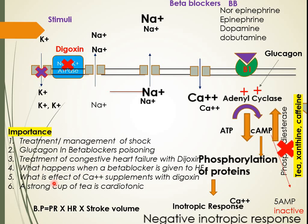Calcium supplements given in combination with digoxin — which already increases cytosolic calcium — may cause drug-drug interactions, so you should be vigilant about that. Also, a strong cup of tea in a hypertensive patient can cause palpitations due to its cardiotonic effect; avoid tea in patients with high heart rate and hypertension. Blood pressure increases because of increased stroke volume due to the cardiotonic effect and increased heart rate due to positive inotropic and positive chronotropic effects.